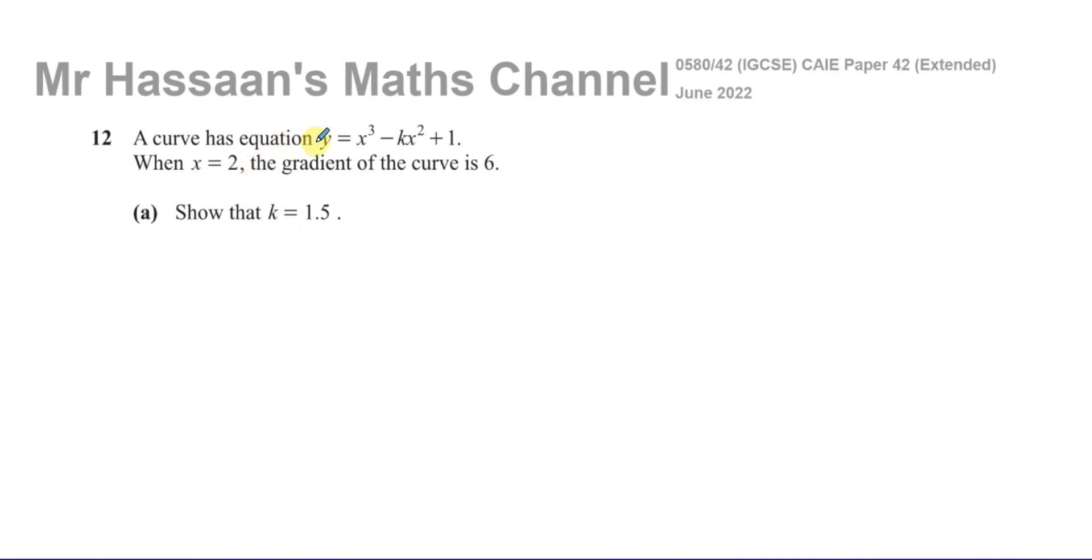And this question here is about differentiation. We're told that a curve has equation y equals x cubed minus kx squared plus 1. When x equals 2, the gradient of the curve is 6. Show that k equals 1.5.